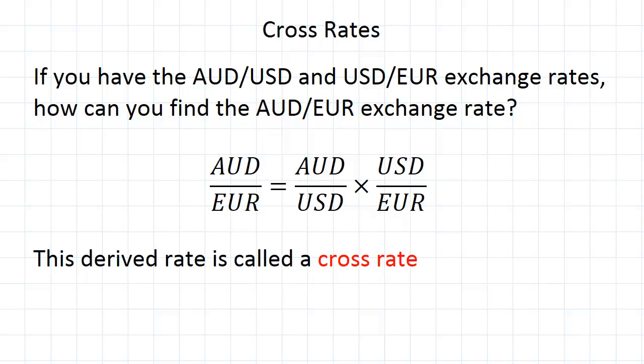Now it's easy to see why this would hold true if you just imagine these fractions. The USD cancels out, and you get AUD over euro.